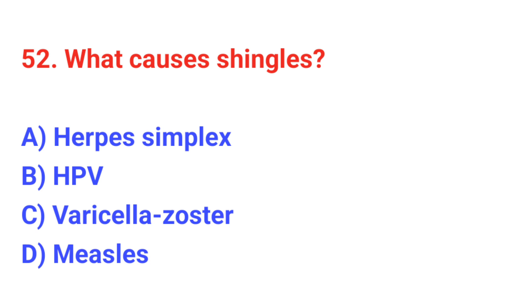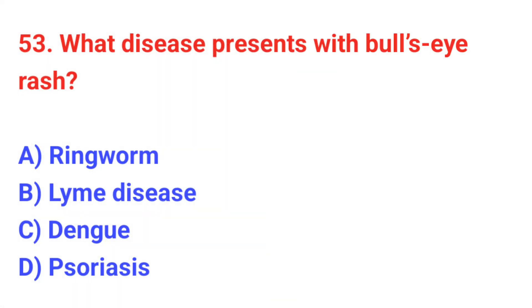Question number 52: What causes shingles? The correct answer is C: Varicella-zoster virus. Question number 53: What disease presents with bull's eye rash? The correct answer is B: Lyme disease.